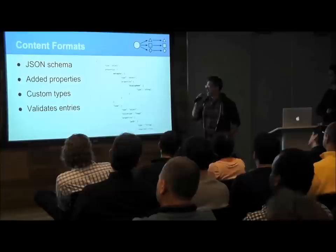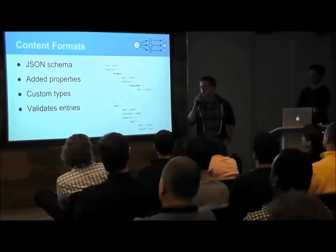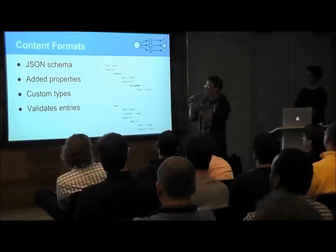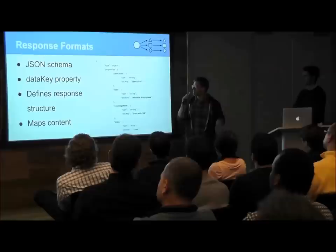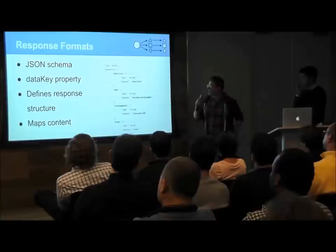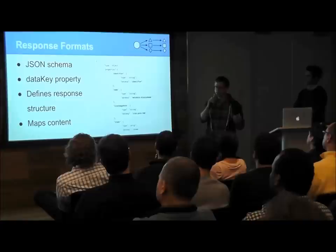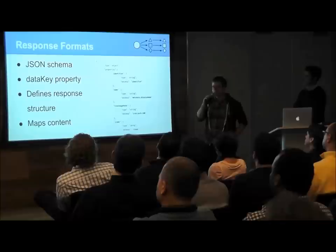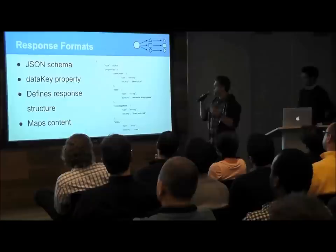Response formats also use JSON schema. There's a special property we added called data key, which defines which field in the JSON of the content entry should be looked up to populate a given field in the response. So for a field like ID, the data key is 'identifier' — we look that up in the content entry and find its value, then populate the response field with that value.